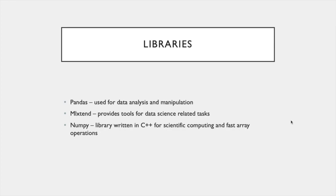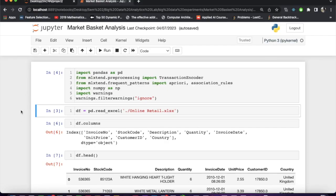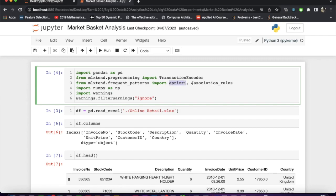Regarding libraries: we used pandas, a popular library for data analysis and manipulation; mlxtend, which provides tools for data science related tasks including apriori and association rules; and numpy, which is written in C++ and is meant for scientific computing and fast array operations. From the mlxtend library we imported TransactionEncoder, apriori, and association_rules.